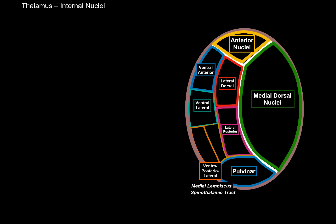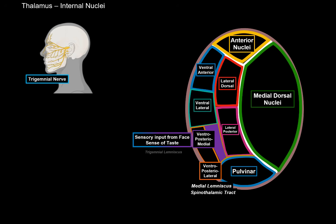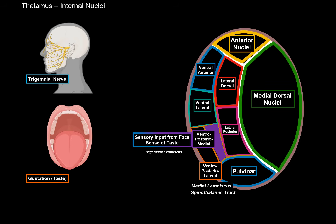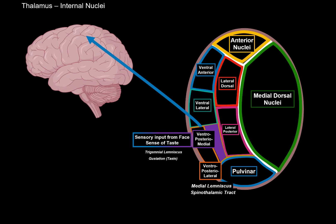The ventroposteromedial nucleus, or VPM, receives sensory information from the face and gustation — the sense of taste. It receives facial proprioception, pain, and touch from the trigeminal nerve through the trigeminal lemniscus. For taste, the facial, glossopharyngeal, and vagus nerves all send signals to the VPM, which then gives off axons toward the primary somatosensory cortex.